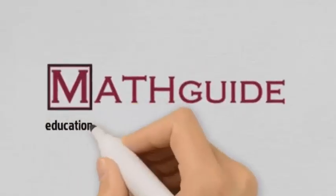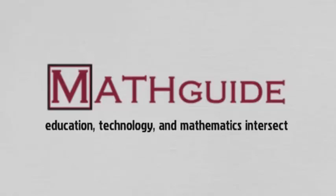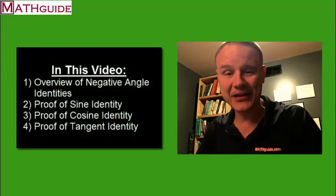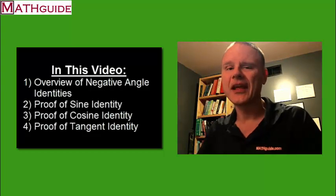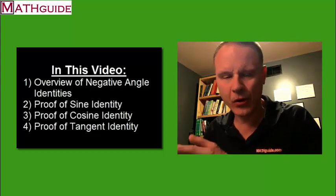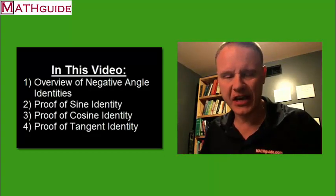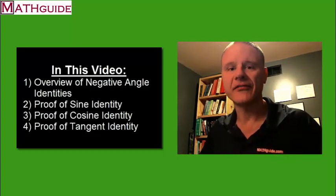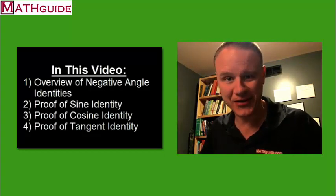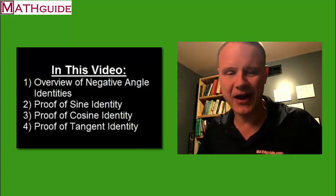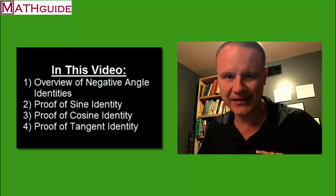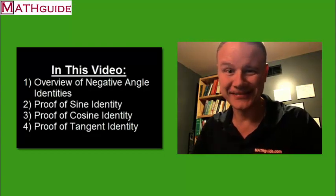This is MathGuide.com and my name is Mark Karadimos. In this video, we're going to talk about the negative angle identities. I'm going to first start out talking about what they look like, real briefly. And then in the following section, I'm going to derive the sine identity, and the following one after that, derive the cosine identity, and then finally, the tangent identity. Let's get started.